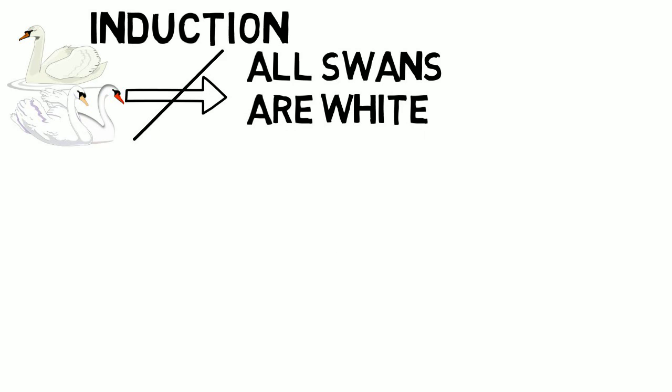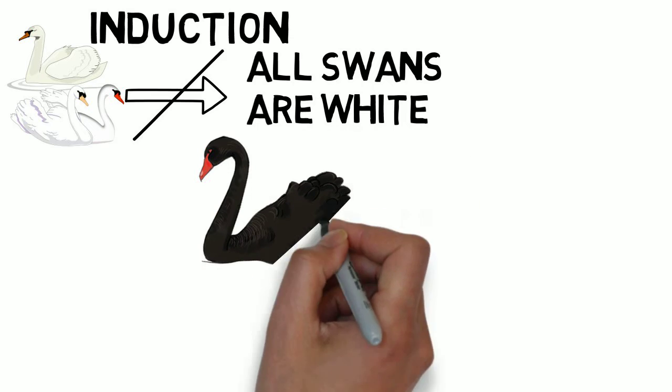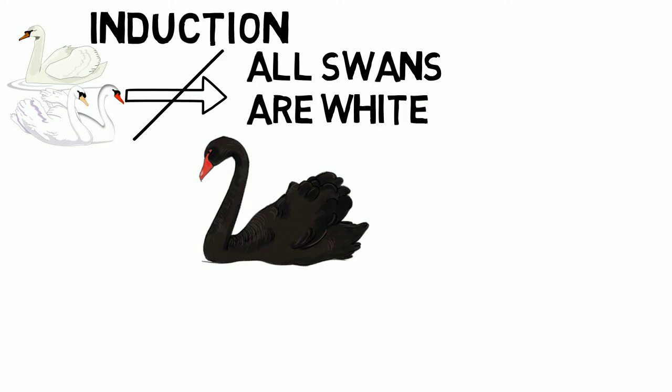A good example of why induction is rubbish is precisely the swan example. Before Europeans discovered how to get to Australia, we had previously thought that all swans were white — it was used as a textbook example of something self-evidently true. As soon as we got to Australia and found black swans, we had to rewrite all of our philosophy books. One black swan was able to destroy the supposedly general truth that all swans are white.